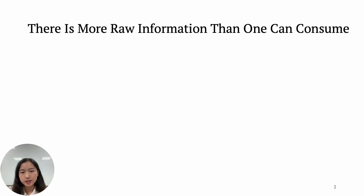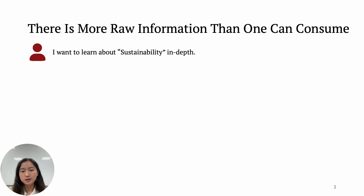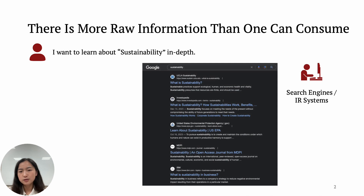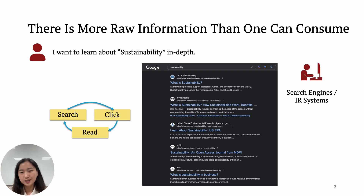We are living in an age of information abundance. There is a gap between the amount of raw information and the amount of information that an individual can possibly consume. For example, when you want to learn about a rich topic like sustainability, if you go to search engines or information retrieval systems, you'll probably get a lot of relevant webpages or documents. Since they are all very relevant, you need to collect and read all of them. Very likely, after reading something, you need to do the search again to dive into some concepts and repeat this inefficient process.